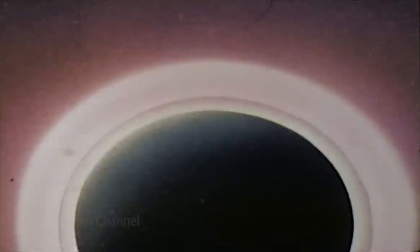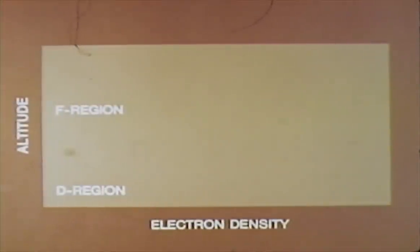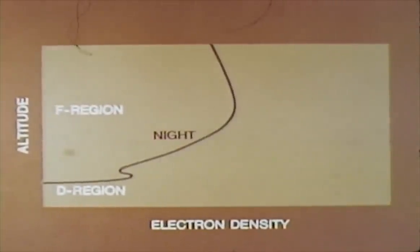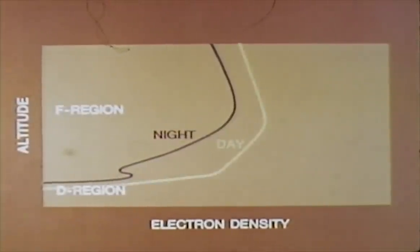Up in the F region, however, the extremely rarefied atmosphere allows a large free electron density to exist throughout the night. Shortly after sunrise of the following day, the D region ionization, consisting mostly of electrons, is re-established by solar radiation. We are concentrating attention on atmospheric ionization processes because the free electron density at the various altitudes determines the signal propagation behavior of many of our radar and long-range communication systems.